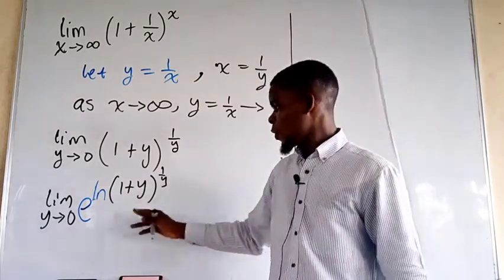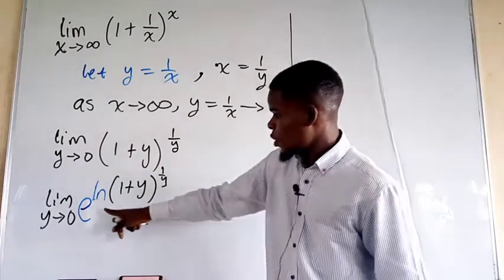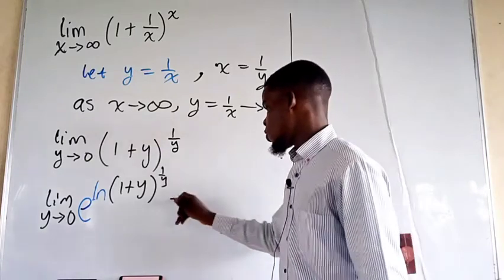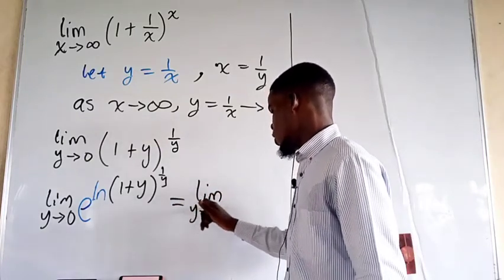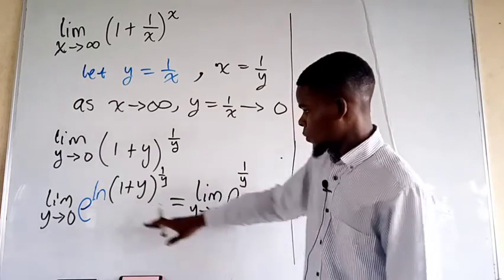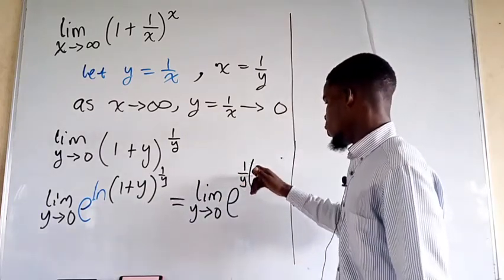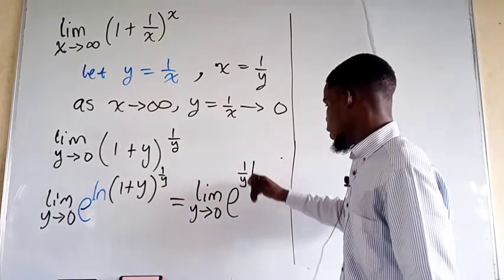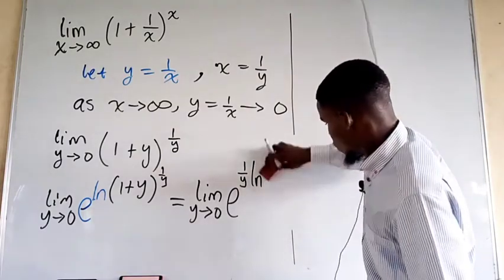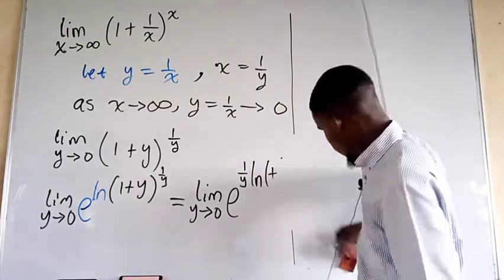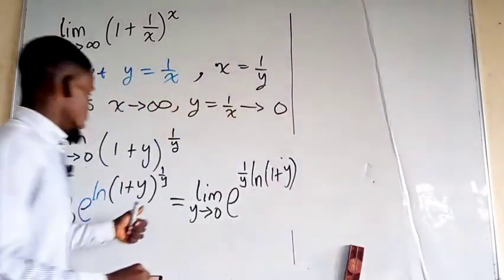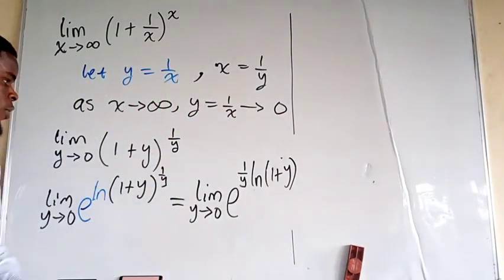From here, we observe: since we are taking the logarithm of something raised to some power, we can bring this power to the front of the logarithmic sign. This gives us the limit as y tends to zero of e raised to the power of (1 over y) times the natural log of (1 + y). This brings the power down and we take the natural log of (1 + y).